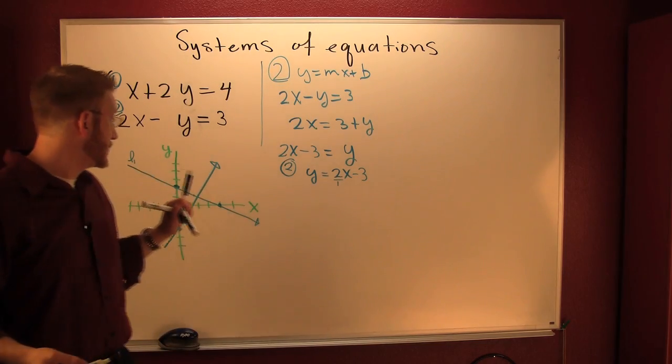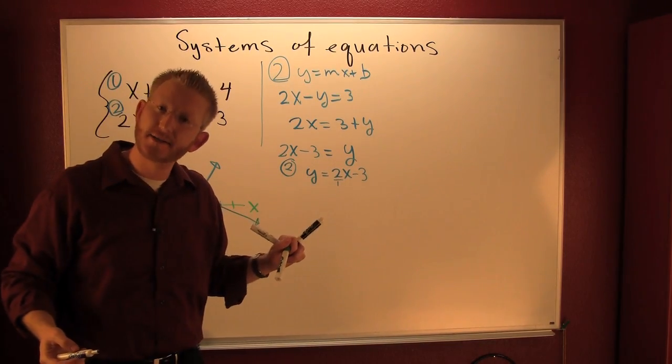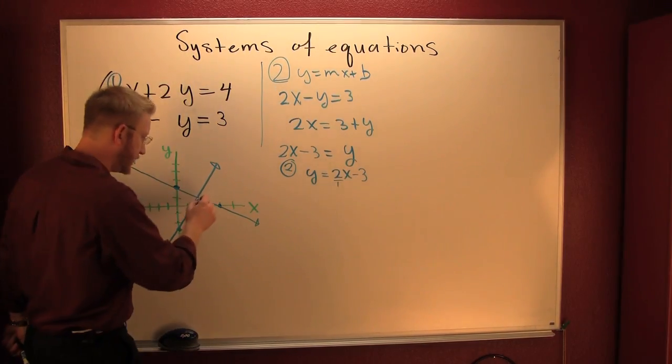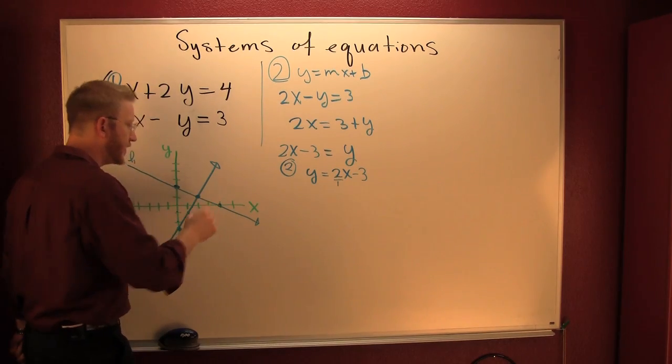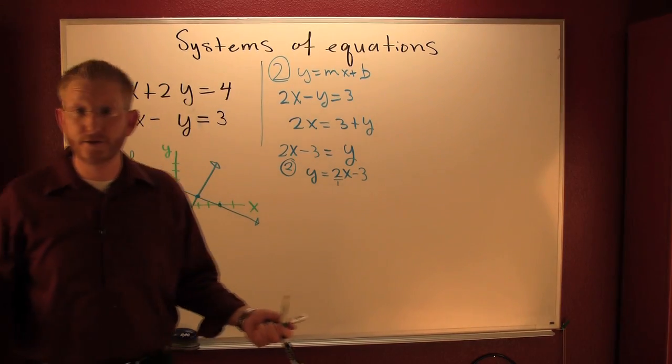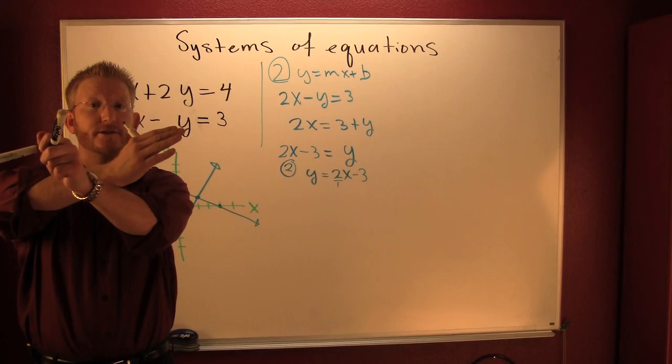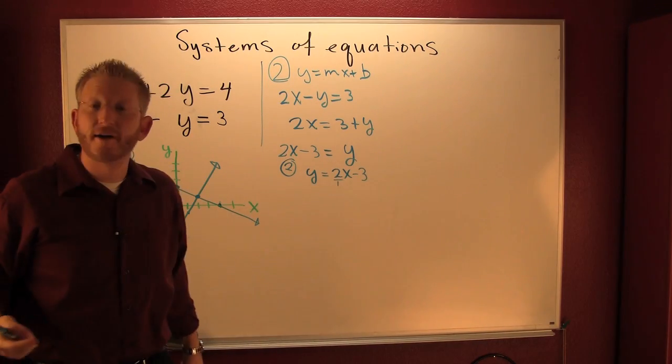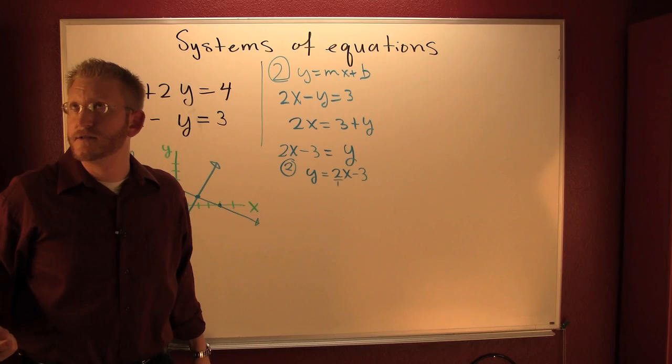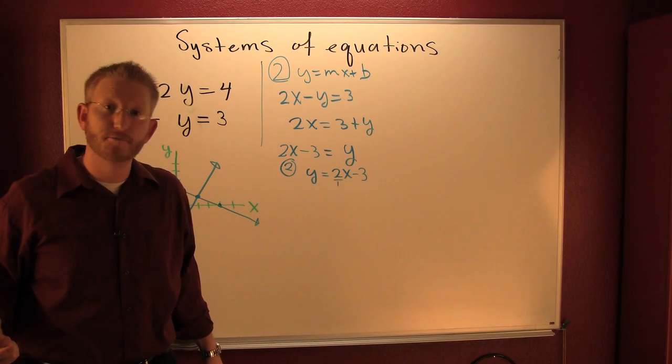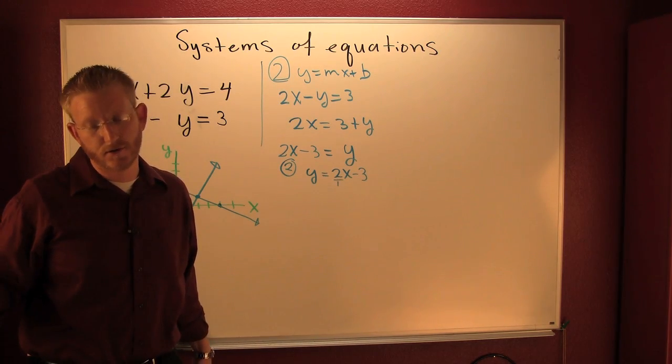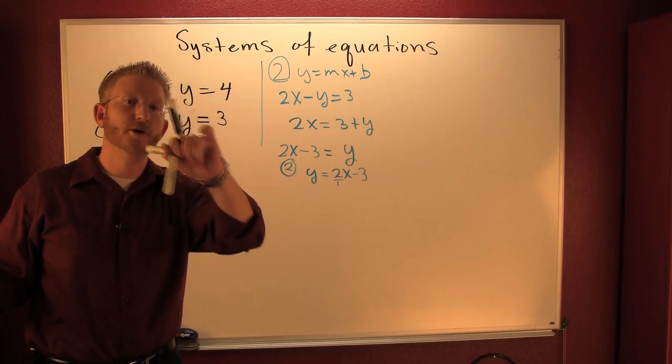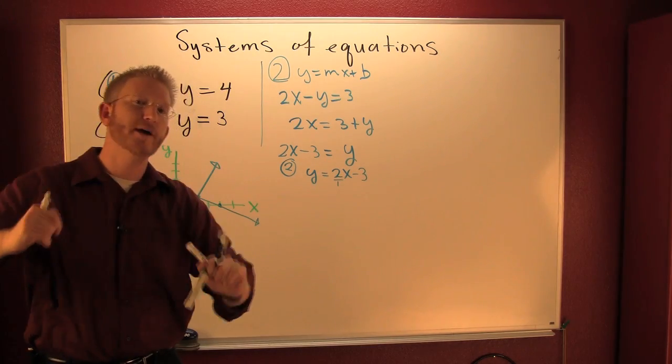And it appears that my system has a solution right around that point. A solution is where the two lines are going to cross. This would be finding the solution to a system by way of graphing. It involves graphing. We're going to be talking about two other ways in just a moment.